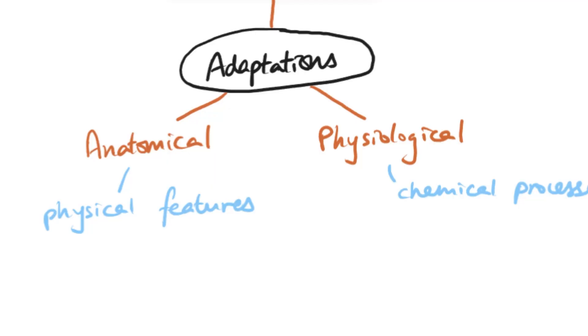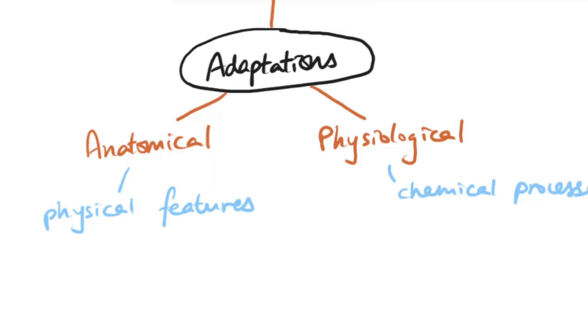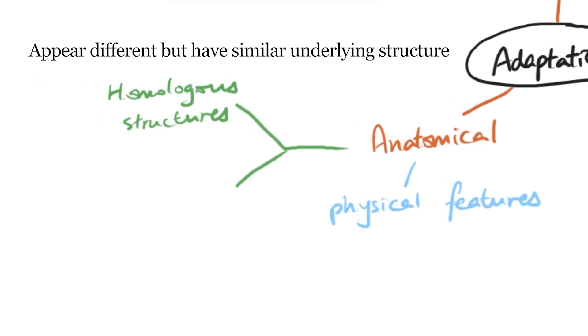One specific thing to notice about anatomical adaptations is that they can provide evidence for evolution. Earlier when we were looking at chapter 10.3 about evidence for evolution, we came across something called homologous structures when looking at comparative anatomy. Homologous structures are referring to structures that look very different on the outside but have the same or very similar underlying bone structure. For example, the arms of a human versus the wings of a bat and the flippers of a dolphin.